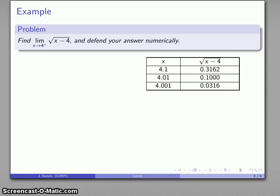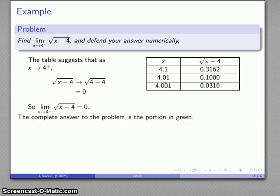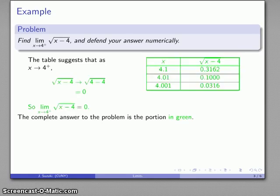Let's also try an algebraic approach. As x gets close to 4 from above, sqrt(x − 4) gets close to sqrt(4 − 4), which is sqrt(0), or just 0. That suggests that as x approaches 4 from above, sqrt(x − 4) approaches 0. Our table supports that — for x values close to 4, the values of sqrt(x − 4) are also fairly close to 0. A complete answer should include both the table and the algebraic work that leads to the limit value.